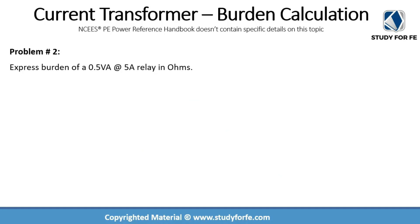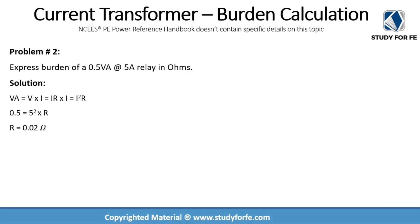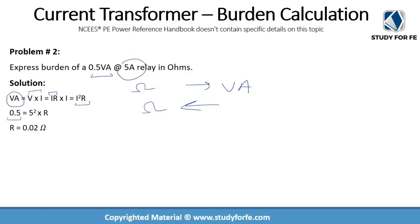Let us look at another practice problem where we are asked to express the burden in ohms, given the burden in volt-amperes at 5 amps. The burden is 0.5 VA. Since VA = I²R, we have I²R = 0.5. The secondary current rating is 5 amps, so I² = 25. Therefore R = 0.5 ÷ 25 = 0.02 ohms.